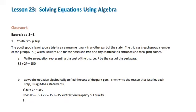In our next step, if 0 plus 2P equals 65. And that is the additive identity, because 0 plus any number is that number.